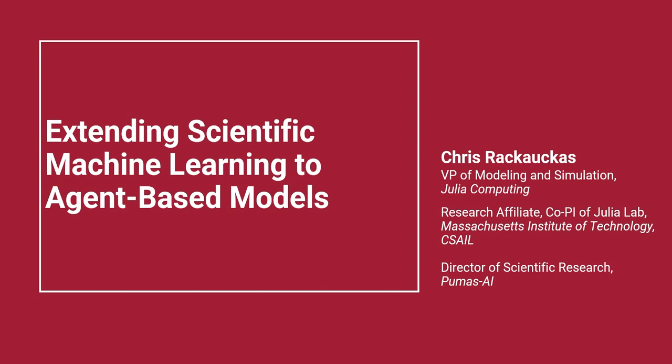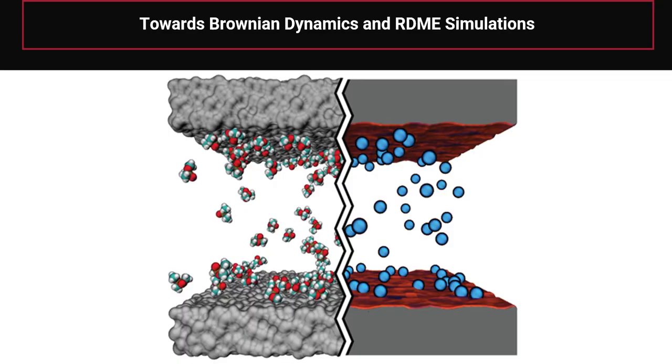I work on modeling and simulation at Julia Computing, recently renamed to JuliaHub. We're building JuliaSim, which is a modeling platform. I'm also a research affiliate and co-PI at the Julia Lab at MIT, which builds open-source software for scientific and machine learning applications. I'm also director of scientific research at a pharmacometrics firm, and I'll be discussing systems biology, systems pharmacology, and how that's being agentized. The core of this talk is how we're taking things we're doing in scientific machine learning and bringing them to the agent-based modeling world.